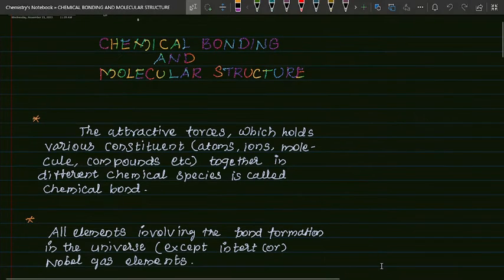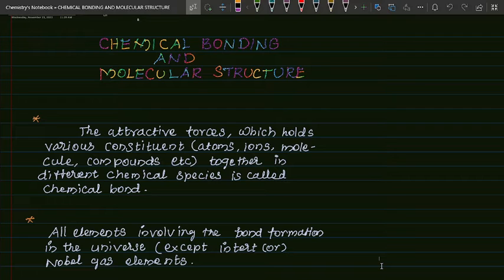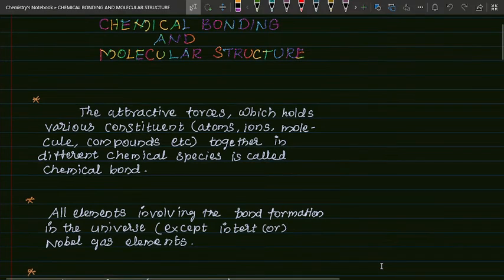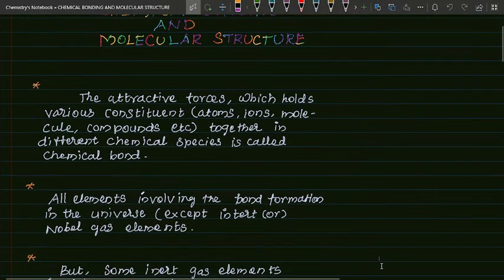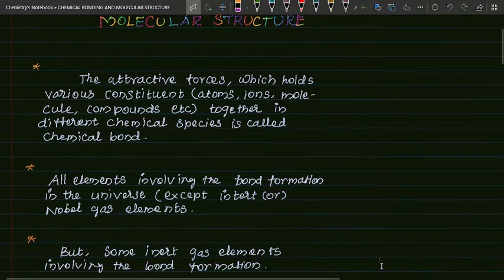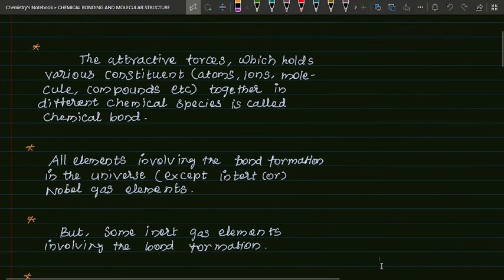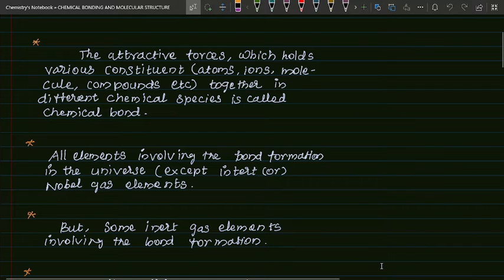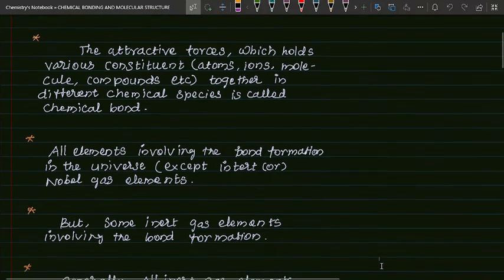First, the attractive forces which hold various constituents like atoms, ions, molecules, chemical compounds, etc. together in different chemical species is called a Chemical Bond. All elements involving bond formation in the universe except inert or noble gas elements, but some inert gas elements also involving bond formation, like xenon.